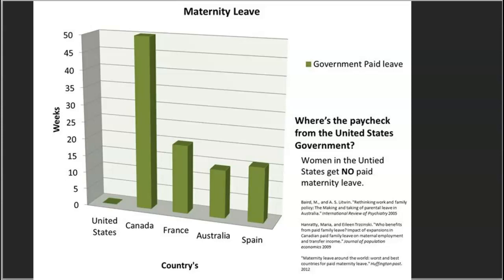Another example — I think this is a very interesting chart — shows maternity leave paid by the government in various countries. In Canada, nearly a year is paid by the government, allowing the mother to stay home and raise the child while still receiving a salary. France has less than Canada but still around 18 weeks. Australia and Spain both have decent maternity leaves too. The United States, however, is at zero. So the student's argument about the need for maternity leave in the United States is pretty clear — argumentative points shown through evidence.